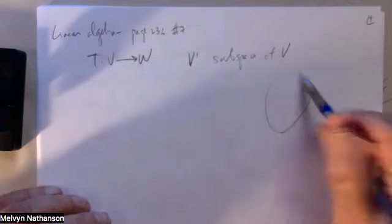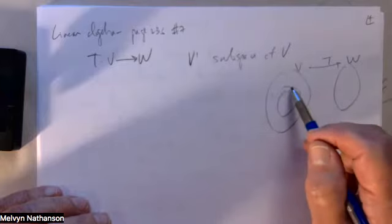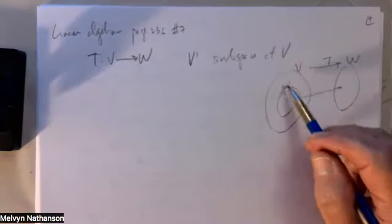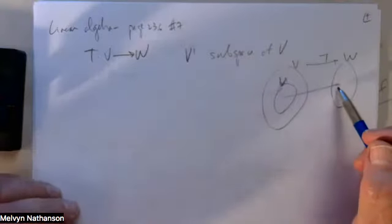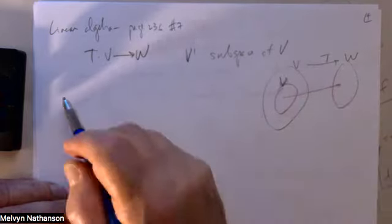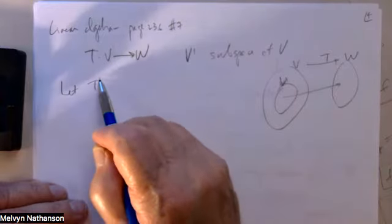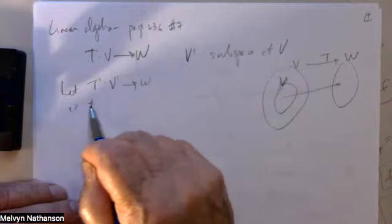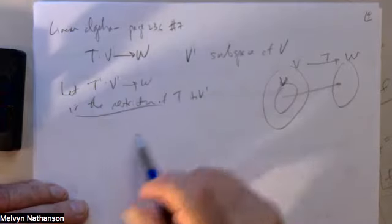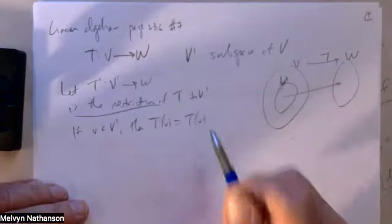So you have a picture — here's V, here's W, and the linear map T from V to W. Sitting inside of V you have a subspace V prime. You can just restrict T to V prime, and it sends every vector in V prime into W. Let me call this T prime, from V prime to W — the restriction of T to V prime. That just means if V is a vector in V prime, then T prime of V is just T of V.